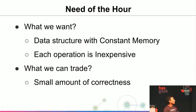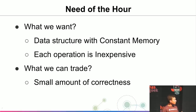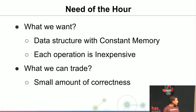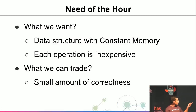So what we want is a data structure with constant memory footprint, where each operation is inexpensive. We cannot have our way with everything — we have to trade something in. Let's suppose we agree on trading some amount of correctness to achieve these kinds of properties.